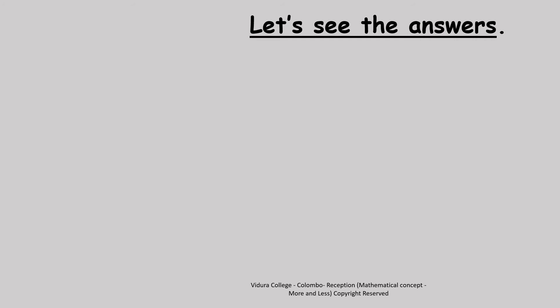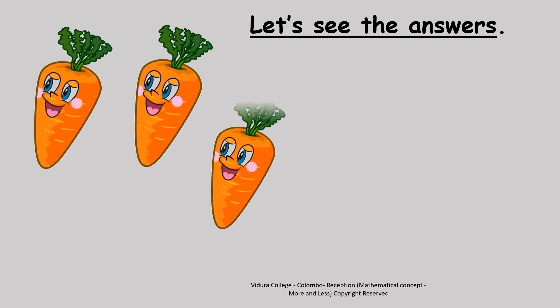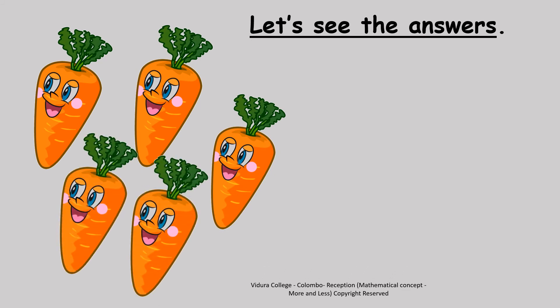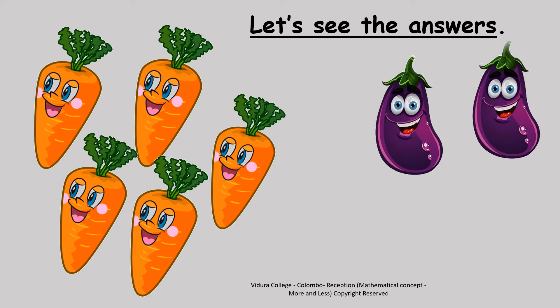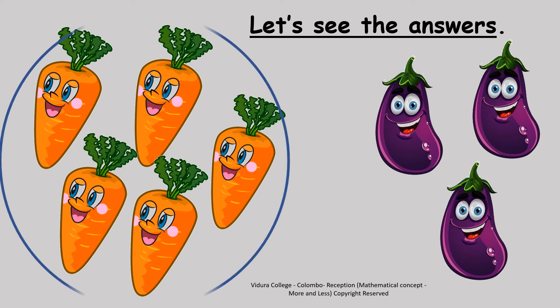Let's see the answers. How many carrots are here? 1, 2, 3, 4, 5 — 5 carrots. And how many brinjas are here? 1, 2, 3 — 3 brinjas. Children, now which group has more? Yes, there are more carrots.